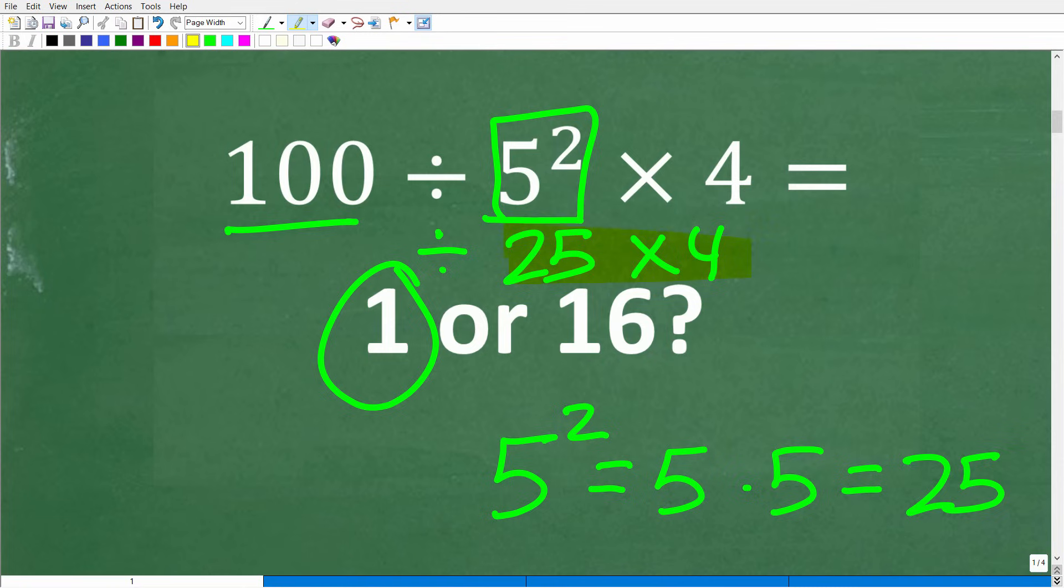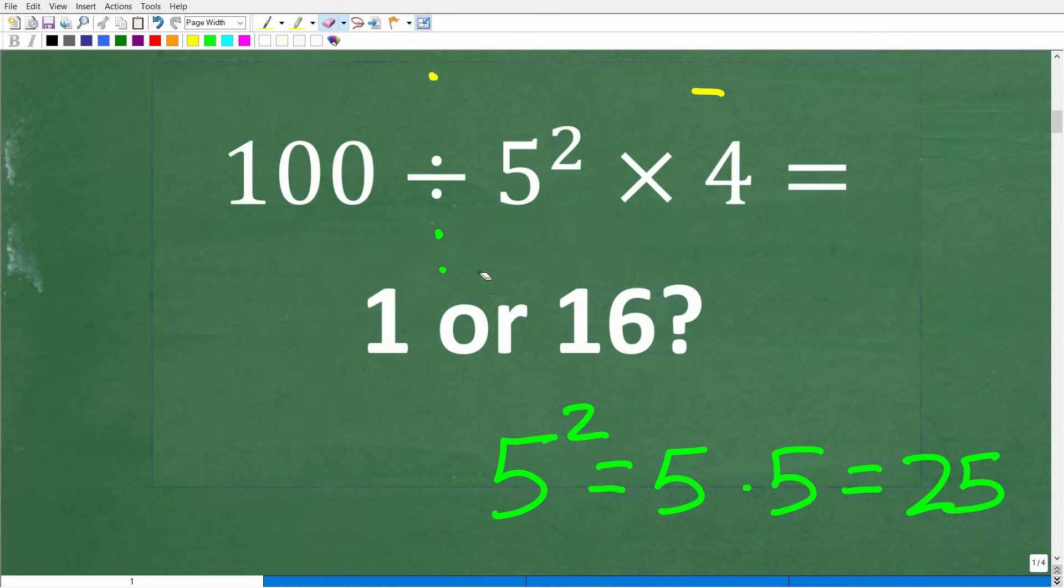Now, a lot of you said, well, that's a good idea to multiply right here. So 25 times 4 is 100. And you're going to end up with 100 divided by 100. Of course, anything divided by itself is 1. Well, that looks pretty good. Unfortunately, it's wrong. Now, why is this incorrect? Well, it's incorrect for this one simple reason.